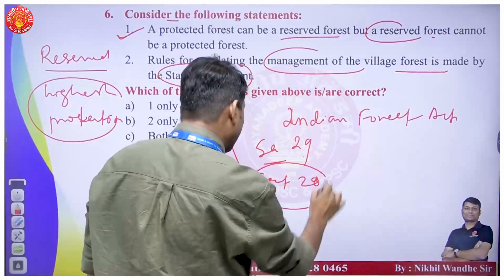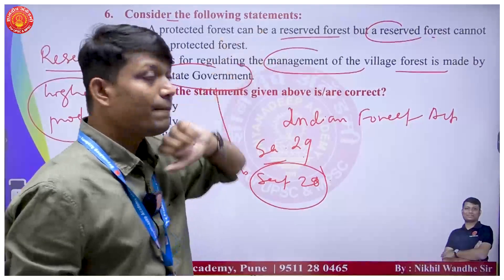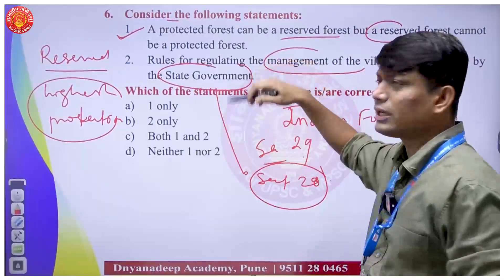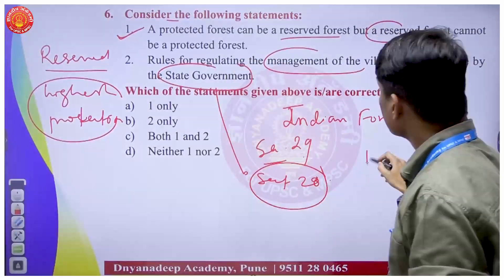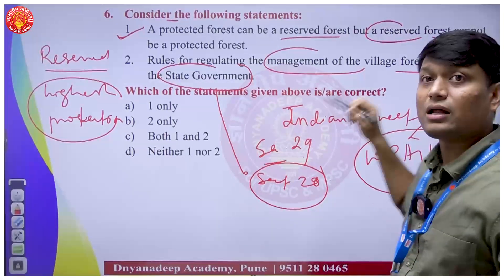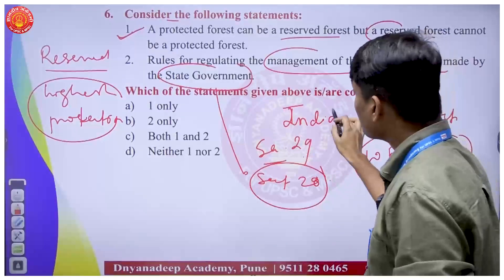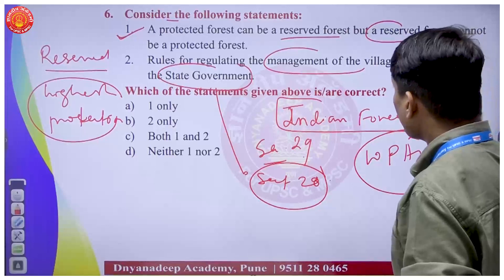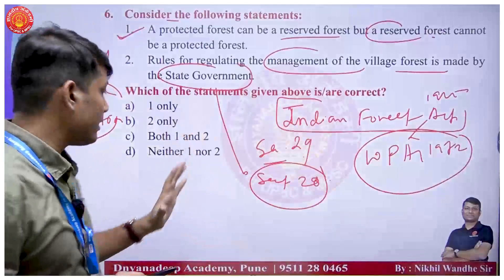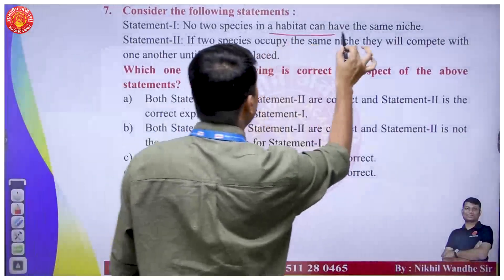Rules for regulating the management of village forests are made by the state government - that is also true under Section 28 of the Indian Forest Act. A common confusion is between the Wildlife Protection Act and forest declaration. When it comes to declaration of forests, there is a separate act from 1927, and protection of forest is carried out under this 1927 act.